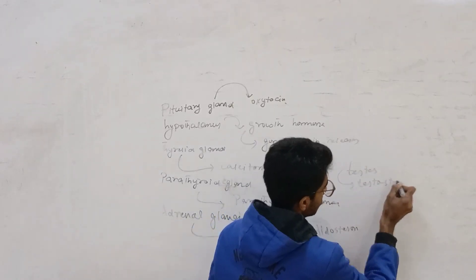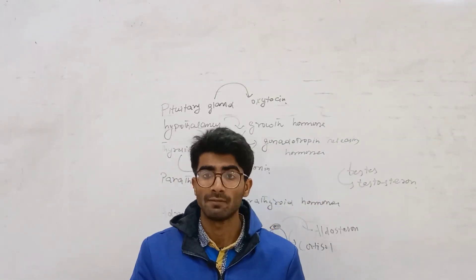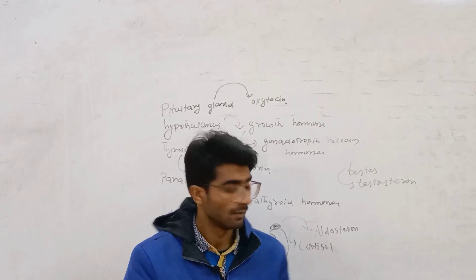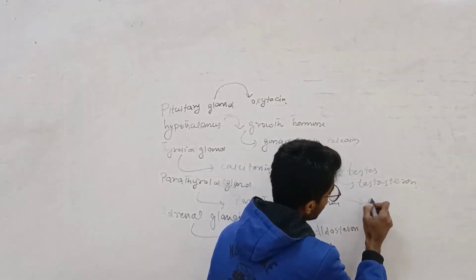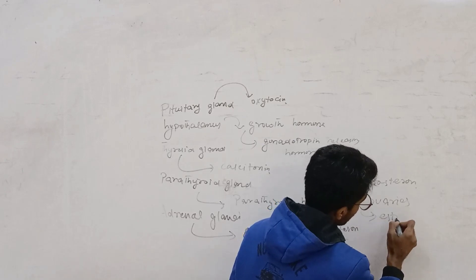The female reproductive system also has a gland known as the ovaries. From the ovaries, estrogen and progesterone are released.